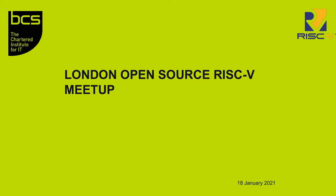All meetups have their own particular character because of who we are. The London RISC-V meetup has always focused on open source, so we tend to have talks that are looking at particularly the open source aspects of RISC-V. I'll give a brief overview of RISC-V in a moment for those of you who are new to the project.